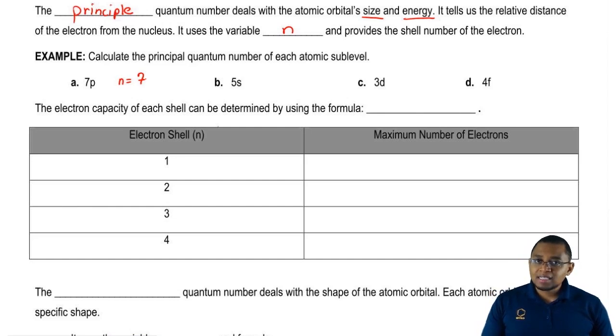For b, 5s, the number in front of s is a 5, so n equals 5. For c, it would be n equals 3, and for d, it would be n equals 4.